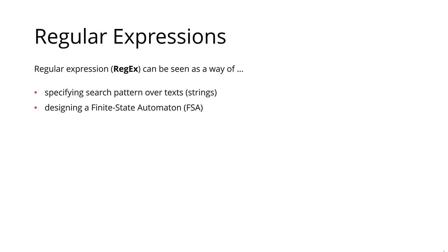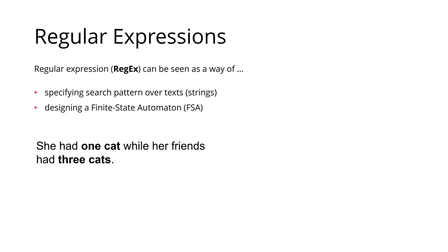We're going to look at that, and also — that's a bit more of the computational side — designing finite state machines. Let's look at a brief example. So let's say we have the text: 'she had one cat while her friends had three cats.' If you want to match or find the bolded items here — 'one cat' and 'three cats' — a regular expression allows us to write an expression, that's why they're called regular expressions, that matches these two things. And this expression could look like this.